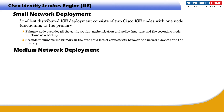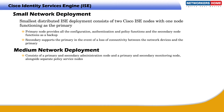As the size of your network grows, or you want to expand your ISE topology, you need to start adding more nodes. With a medium-sized deployment, you begin dedicating nodes to login and administration. This deployment consists of a primary and secondary administration node and a primary and secondary monitoring node, alongside separate policy service nodes.